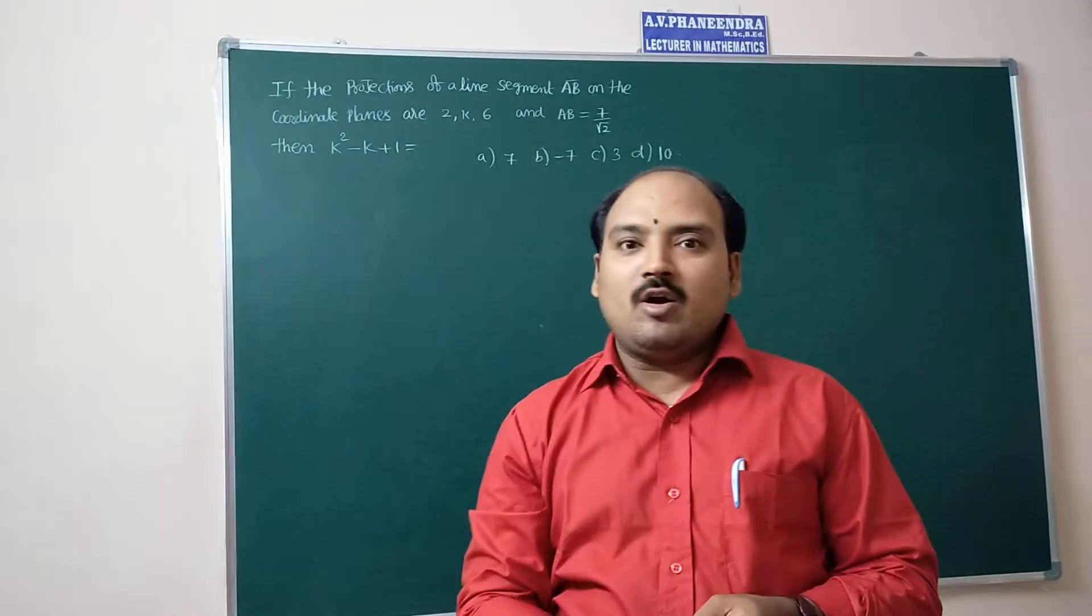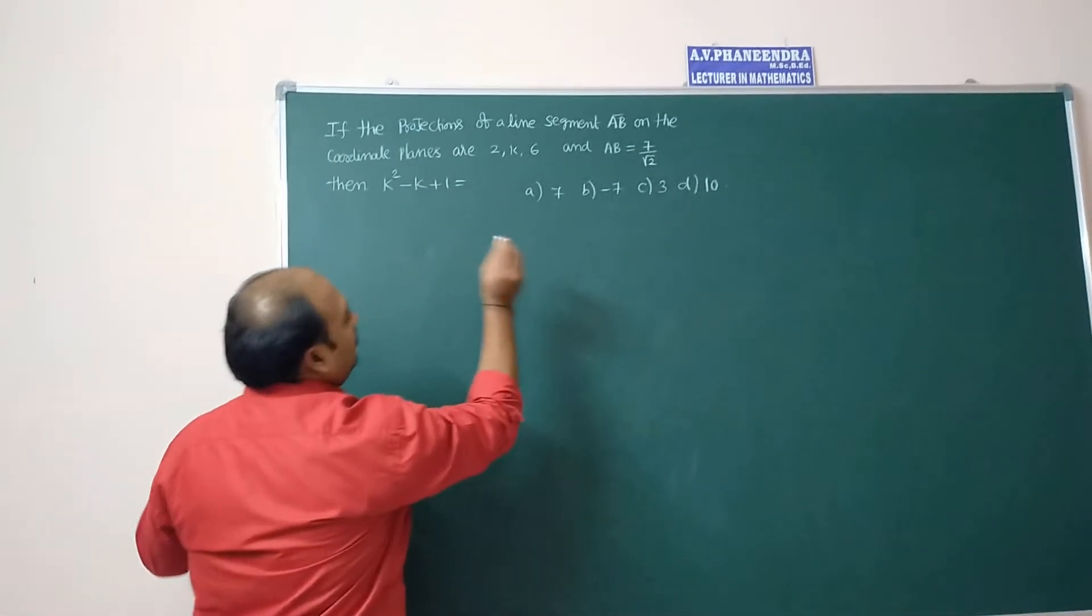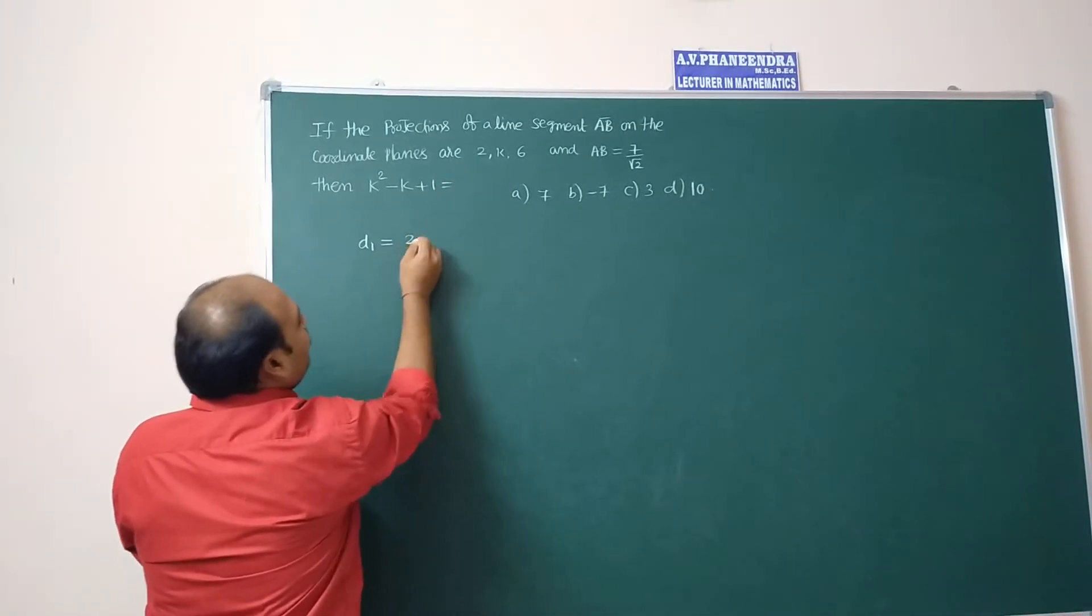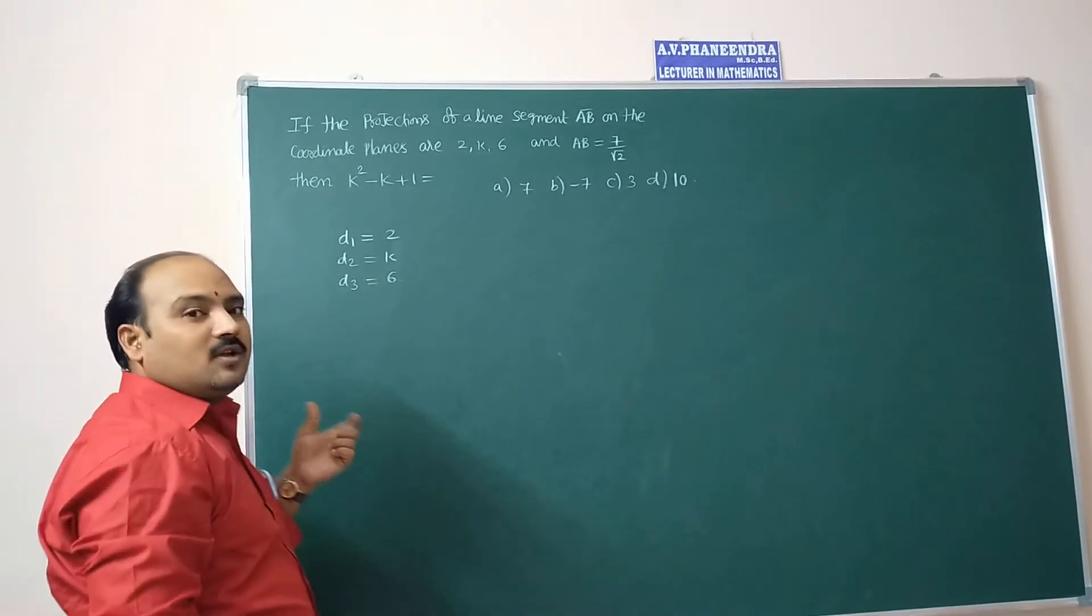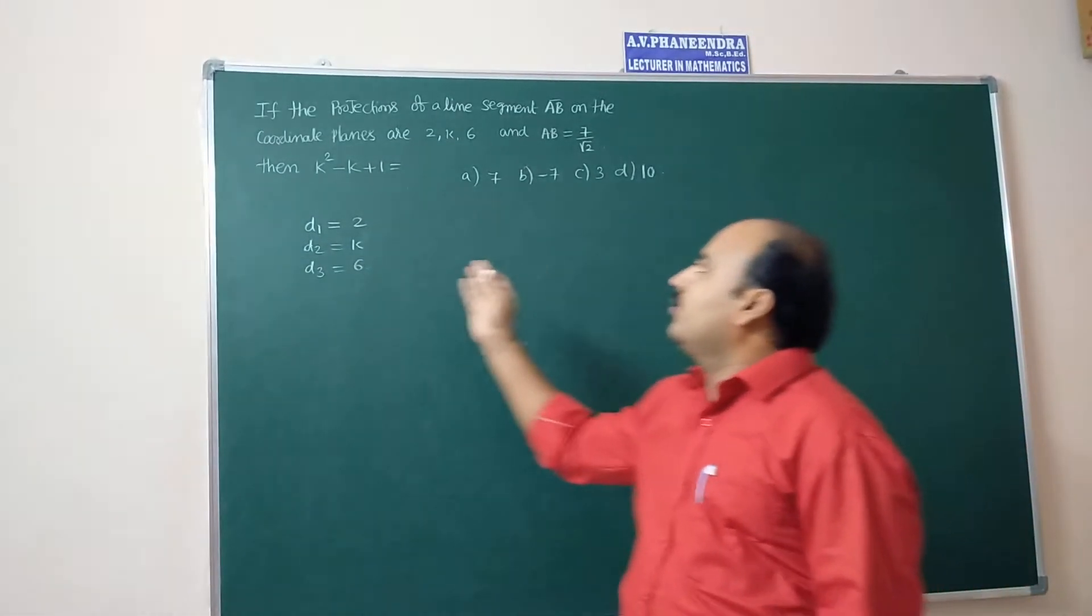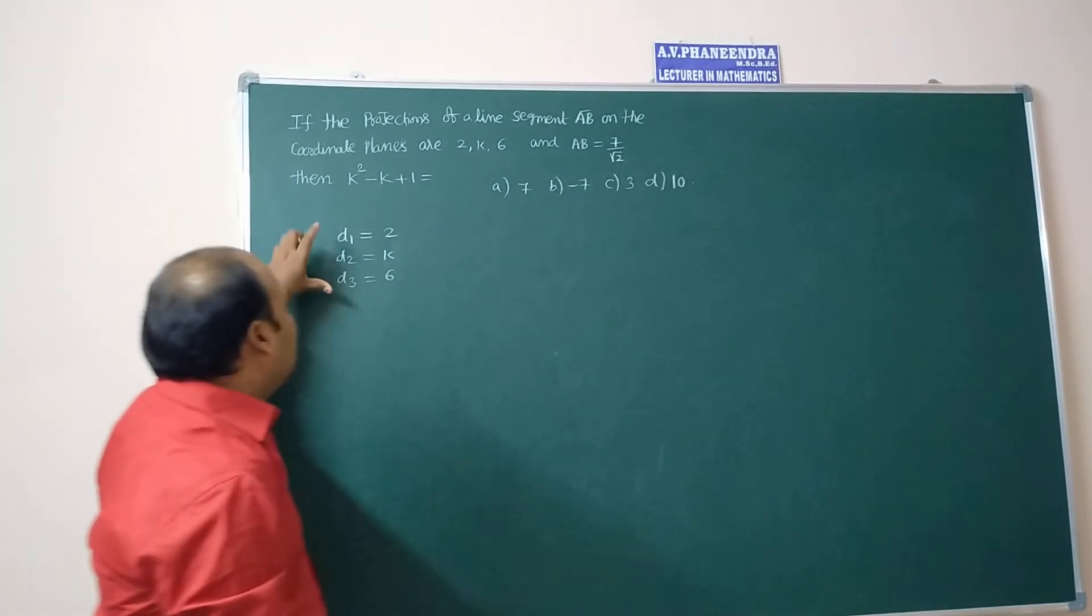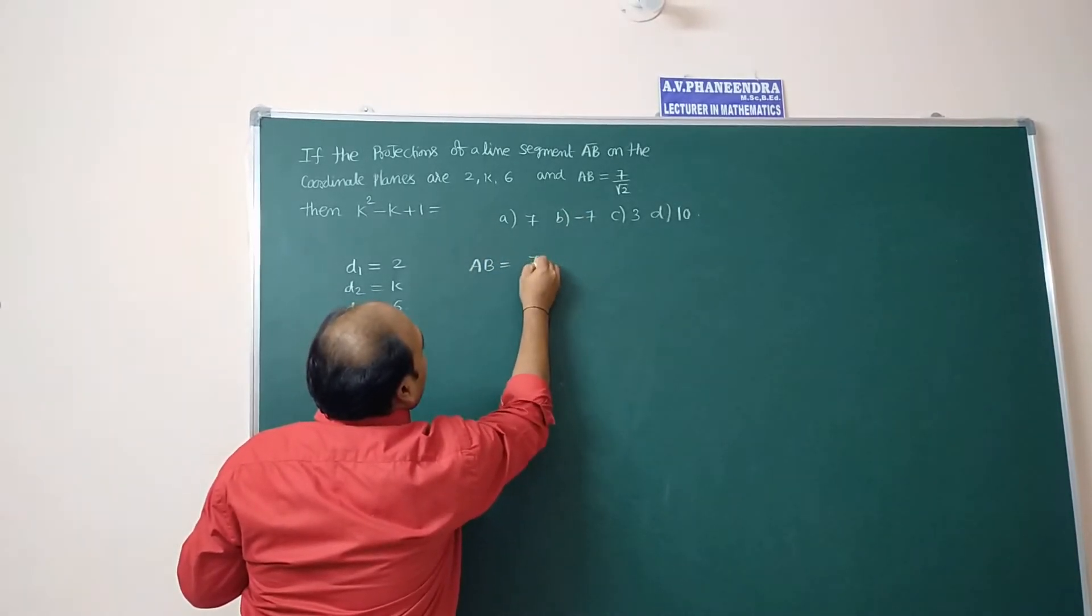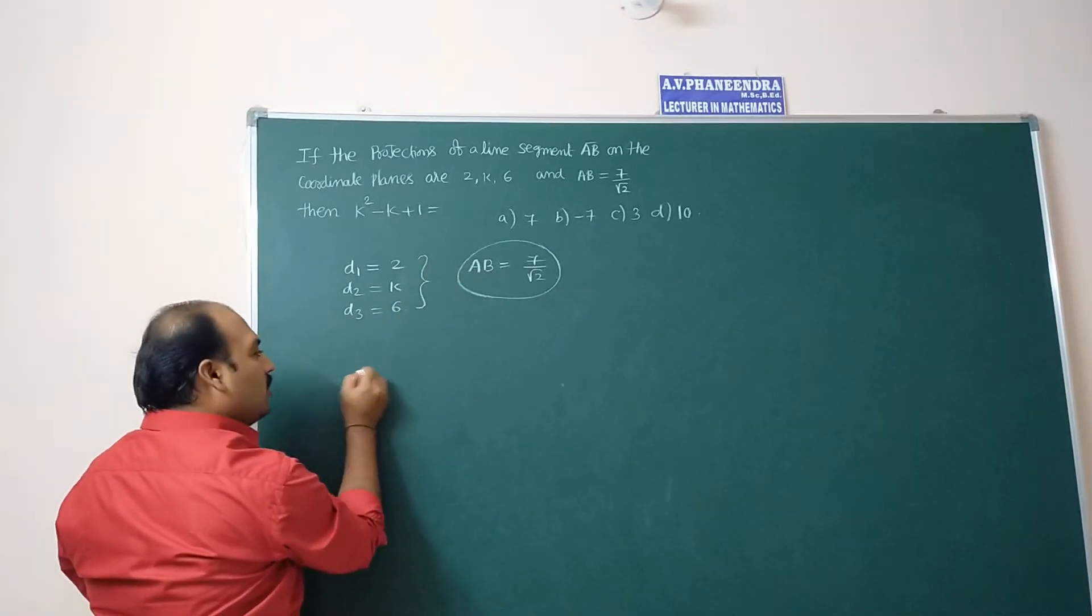We have one shortcut formula regarding the projections of a line segment AB. The length of the projections, these three values are given. One by one we can assume that d1 equals 2, d2 equals k, d3 equals 6. These are the length of the projections from coordinate planes, from XOY, YOZ, and ZOX planes. AB is equal to 7 by root 2. The relation between these three and AB is we have the relation.